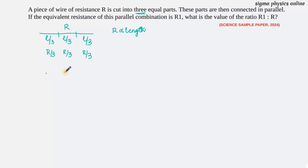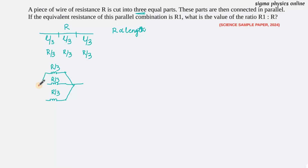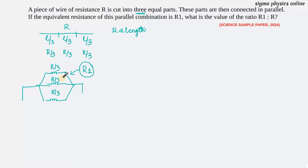So now we have three resistors — R/3, R/3, and R/3 — connected in parallel. We have to find the equivalent resistance of this combination. It is given that the equivalent resistance is R1, and we need to find the ratio of R1 to the original resistance R.